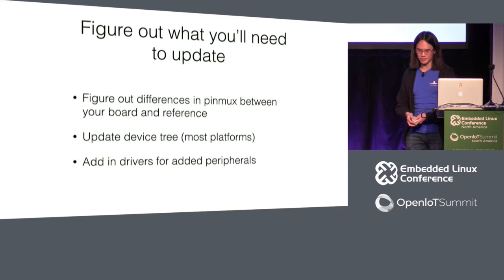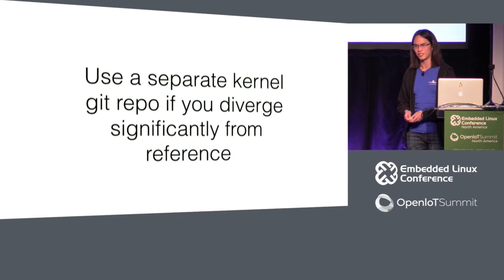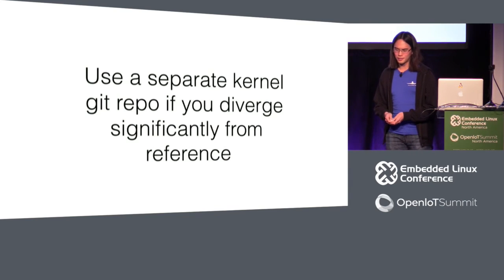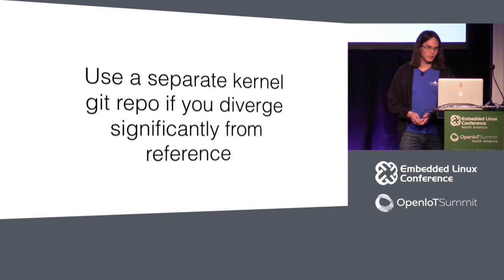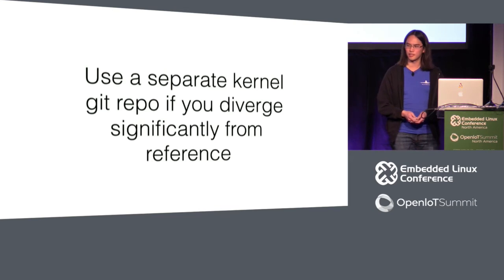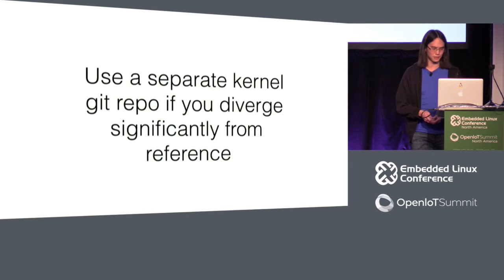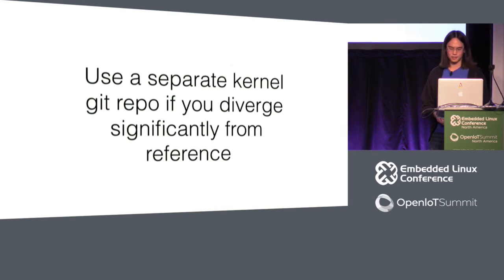While in an ideal world you'd always be working with upstream, if you're following the advice about using vendor-provided software, chances are you're not going to get exactly the latest. If you're going to be doing a lot of kernel hacking, you'll want to use a separate kernel git repository if you diverge significantly from the reference — basically having your own downstream tree. While all build systems provide a method for adding patches on top of packages, if you're adding many drivers, this rapidly becomes unmaintainable. As good a tool as Quilt is, it's nowhere near as capable as a tool designed specifically for this purpose.